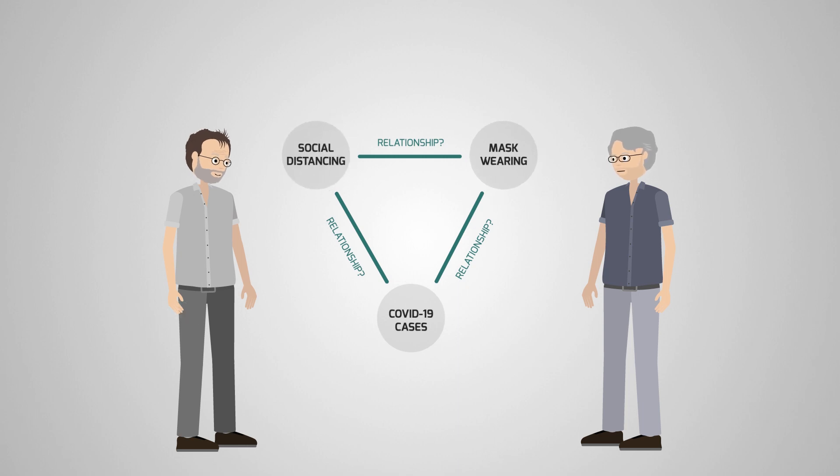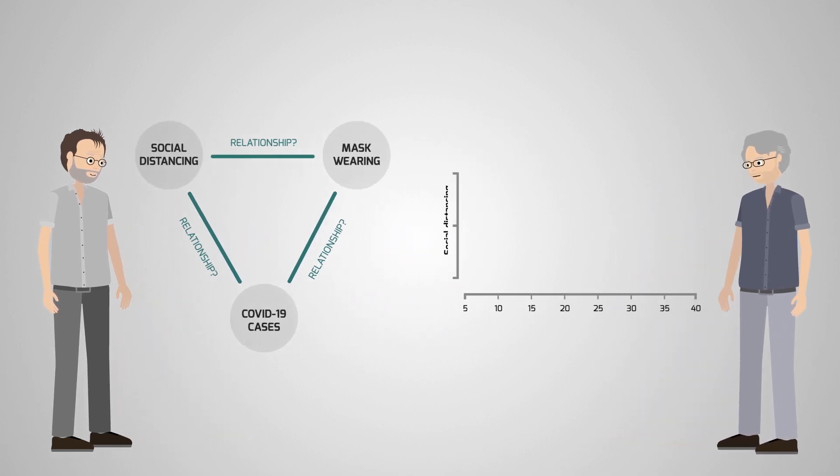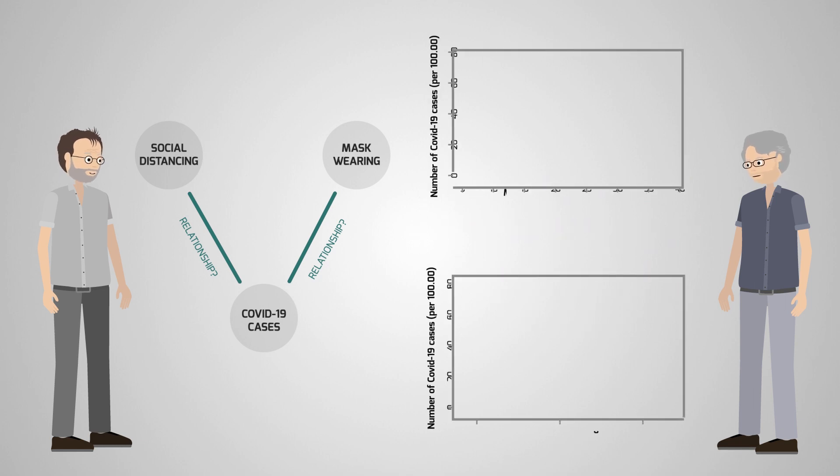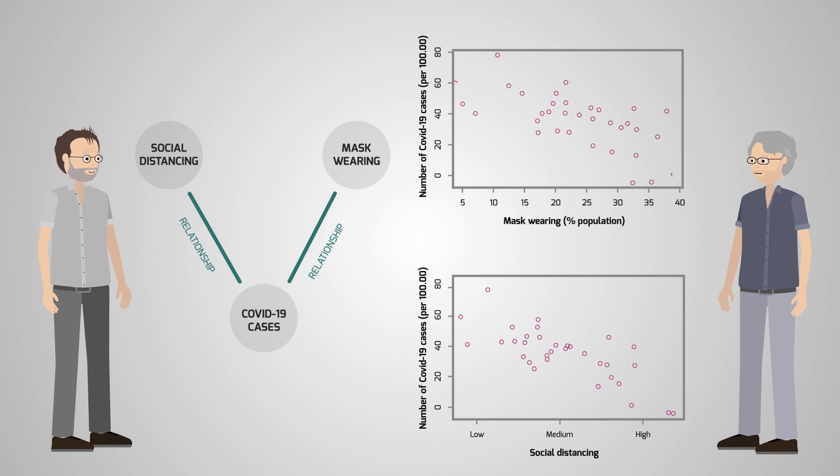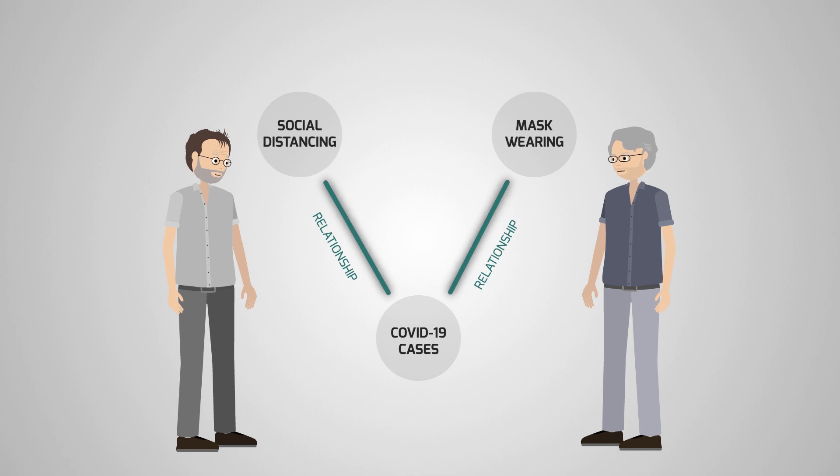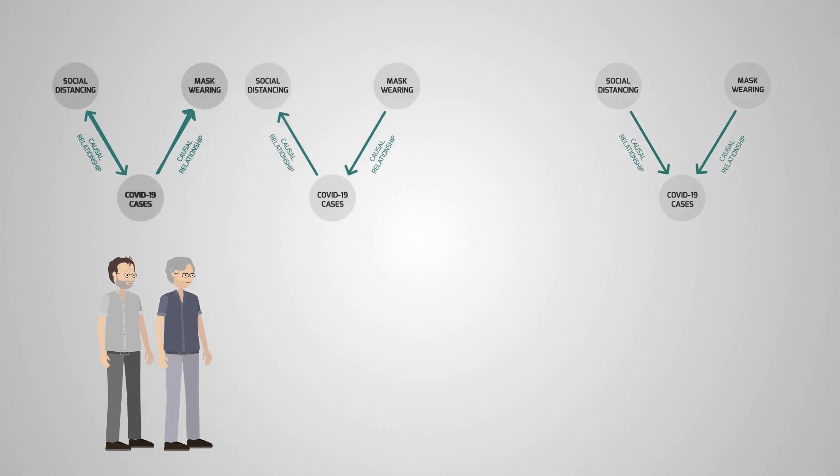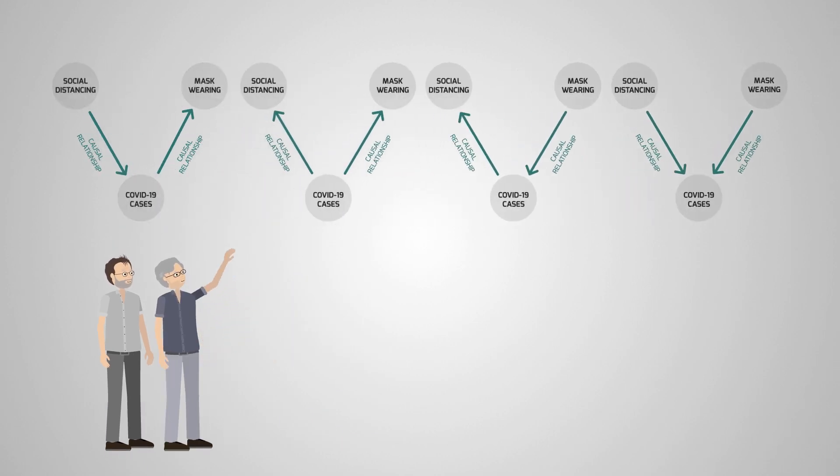Say we collect data from European countries and observe that there seems to be no relationship between the mask-wearing adherence and the severity of the social distancing rules, but both are negatively correlated with the number of COVID-19 cases. The correlations that we observe create this graph, in which the relationship but not the causal directions are indicated. This means that there are four possible configurations of the causal graph.